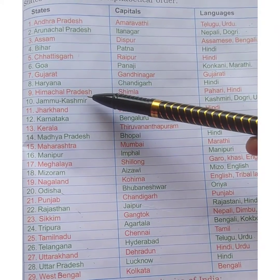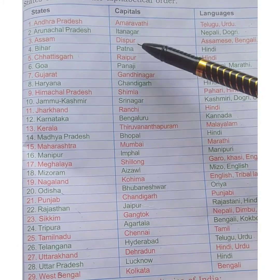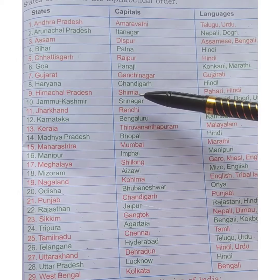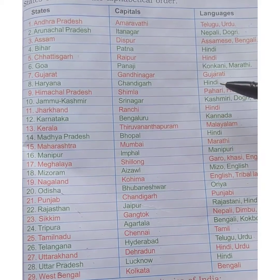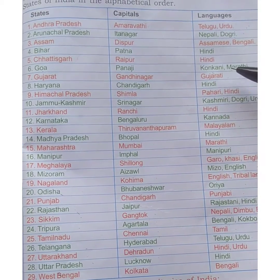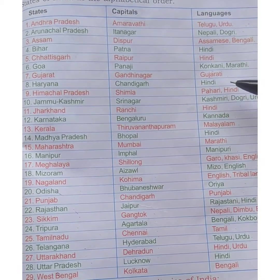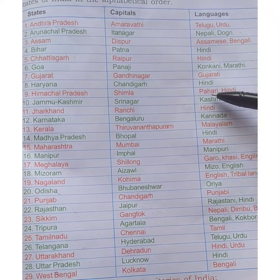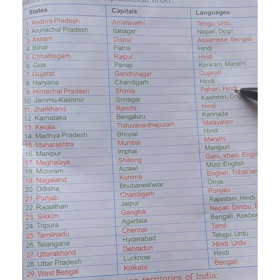Next is Himachal Pradesh. The capital is Shimla. The languages spoken are Pahari and Hindi.